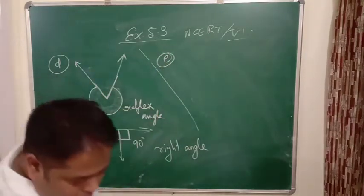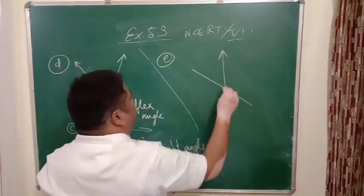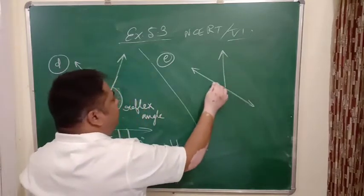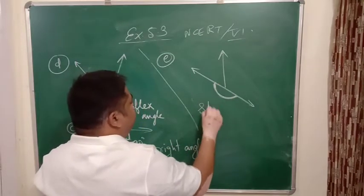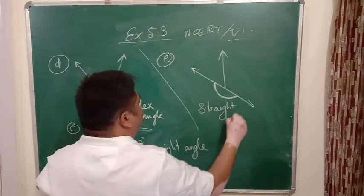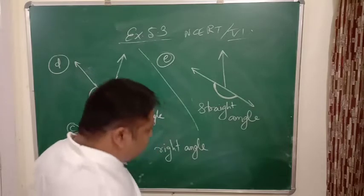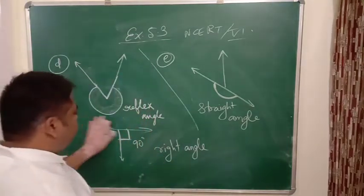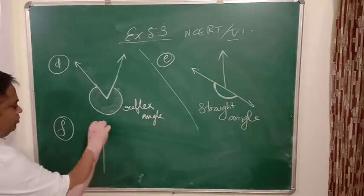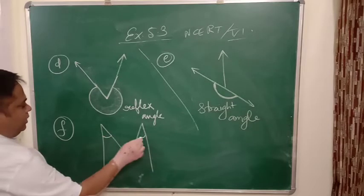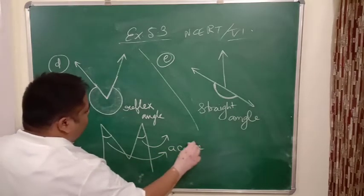E. This is an angle, this is an angle, and this is also an angle. In the book, indication is this angle. So this angle is what? Straight angle. This is a straight angle. Next is F. This angle and this angle. Very clearly it is acute angle. Both are acute angles.